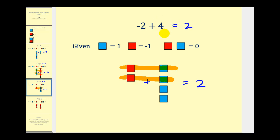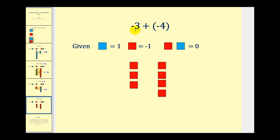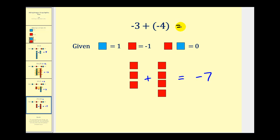Let's try one more. Here we have negative three plus negative four. We have three red squares for negative three and four red squares for negative four. If we combine these, notice we have a total of seven red squares, which is the model for negative seven. Negative three plus negative four is equal to negative seven.